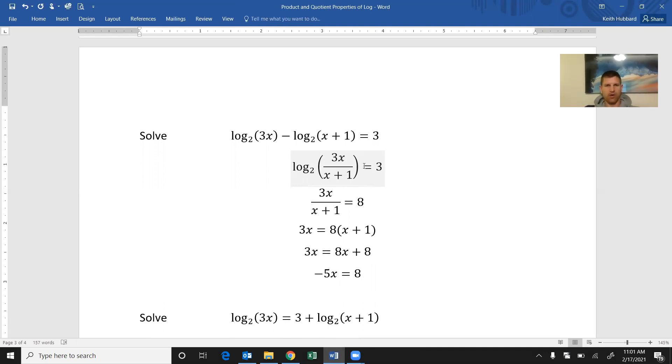Negative 5x equals 8. And so starting here, hopefully this process that I'm highlighting right here is really straightforward to you. Clear denominators, solve, isolate the x. X equals negative 8 fifths. No problems at all.